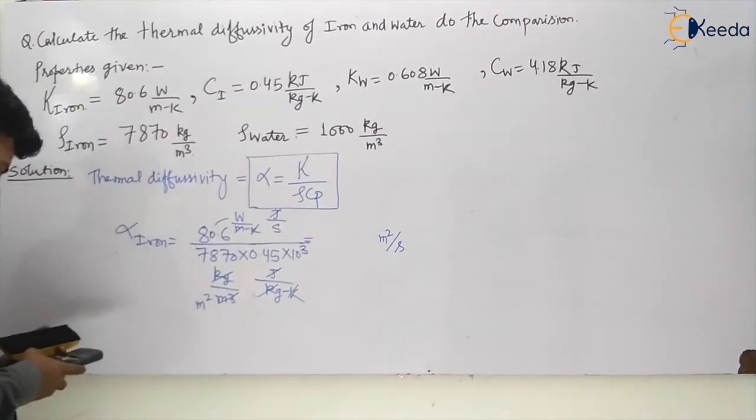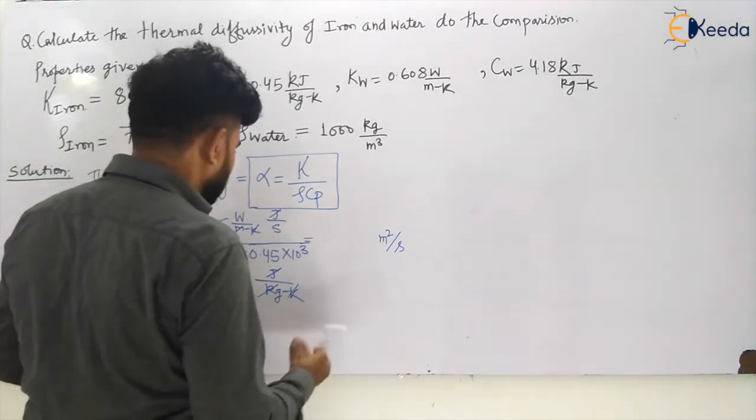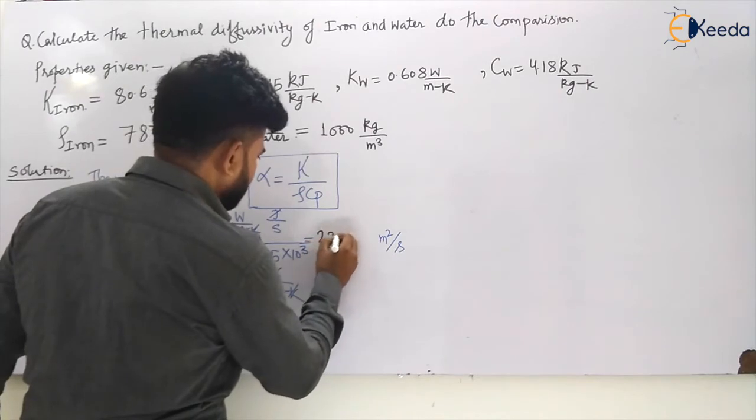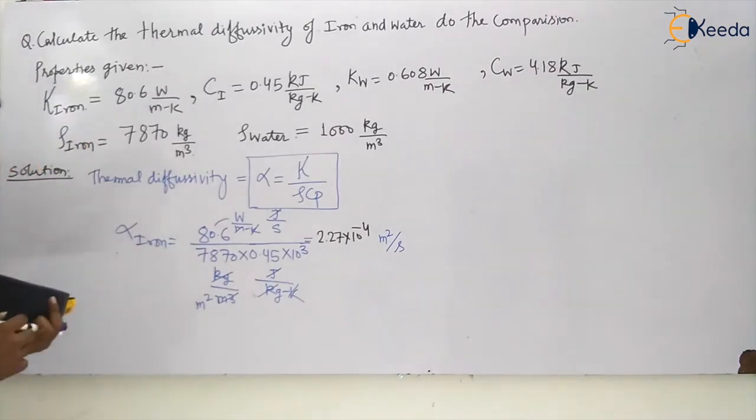So let us calculate this. This will be 80.6 divided by 7870 multiplied by 0.45 into 1000, and 80.6 divided by this will be 2.27 into 10 to the power minus 4 meter square per second.